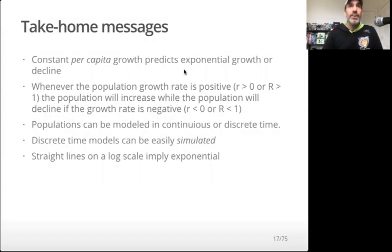Some quick take-home messages. First, constant per capita growth rate predicts exponential growth or decline. Whenever a population growth rate is positive, so that's little r bigger than zero or big R bigger than one, the population will increase. The population will decline if the growth rate is negative, little r less than zero. And the equivalent for big R is big R being less than one. That makes sense for the big R because if we take a number and multiply it by a number less than one, between zero and one really, the value will get smaller and it'll just keep getting smaller and smaller.